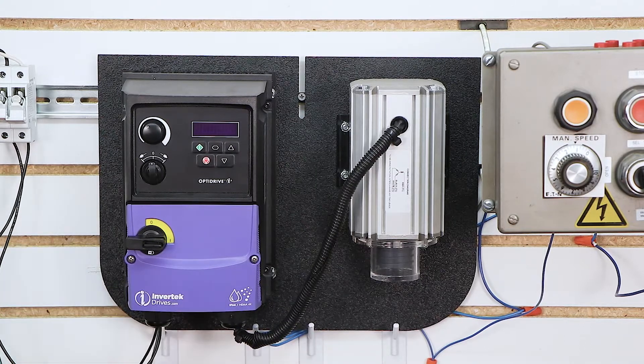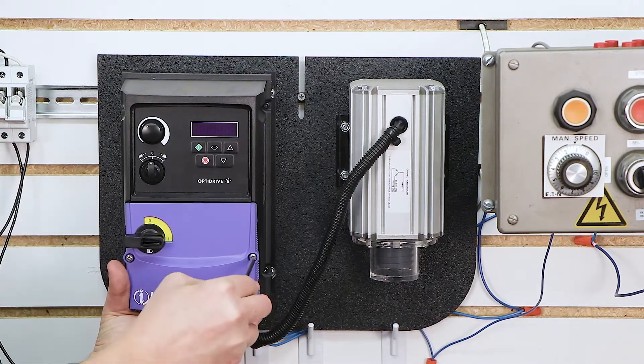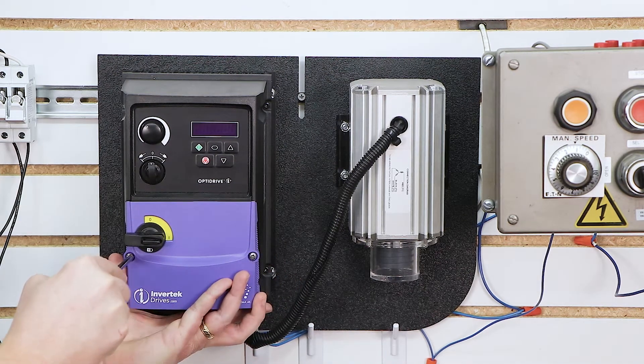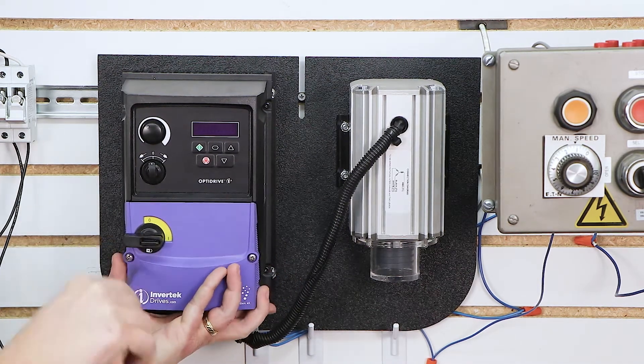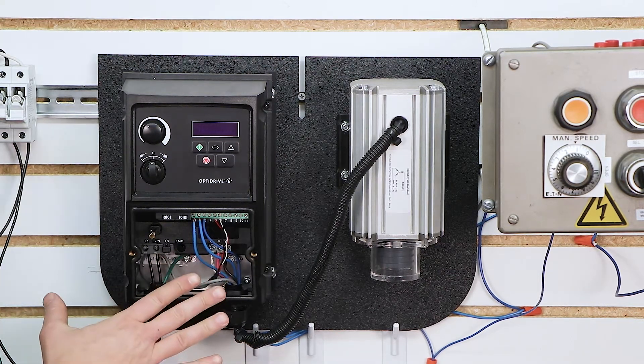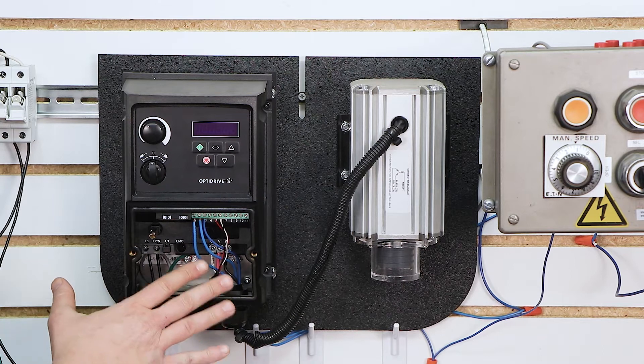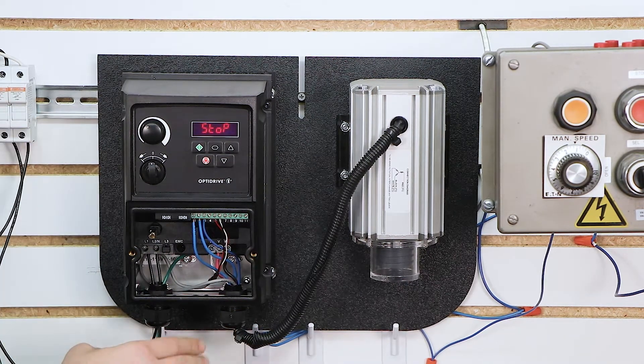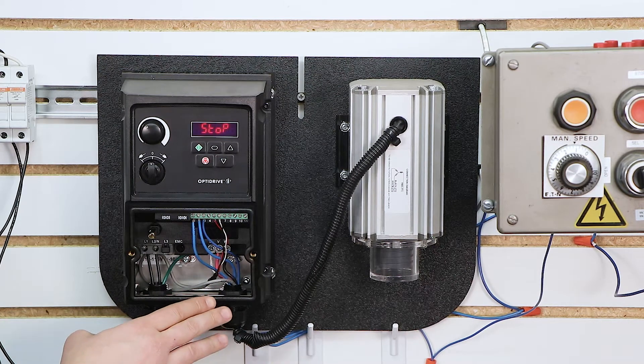So we're going to start by removing the front cover. You just need to take a Phillips head screwdriver and rotate counterclockwise to loosen those screws. And I've already pre-wired this for our configuration, but in the previous video, we applied our incoming power, so I'm just going to power it up.